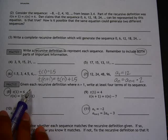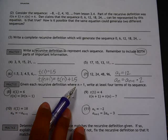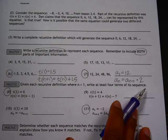We're going to look at 8 and 11. Given the recursive definition where n is greater than 1, write at least 4 terms of the sequence.